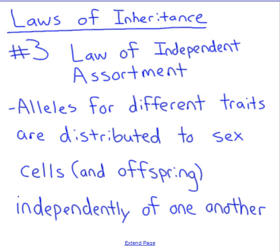The third law is the law of independent assortment: alleles for different traits are distributed to sex cells and offspring independently of one another. For example, having a widow's peak does not mean you'll be left-handed, and being left-handed doesn't mean you have freckles. In the coin flip analogy, flip a penny for widow's peak and a quarter for freckles — the two coins don't depend on each other. Just because you got heads on one flip doesn't affect the other.